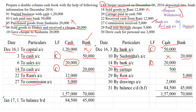Then the last one is drew cash for personal use — taking cash for personal use, which is drawings. Since cash goes out, we are crediting it — by drawings. And it is taken in the form of cash, so in the cash column, we are recording the amount.